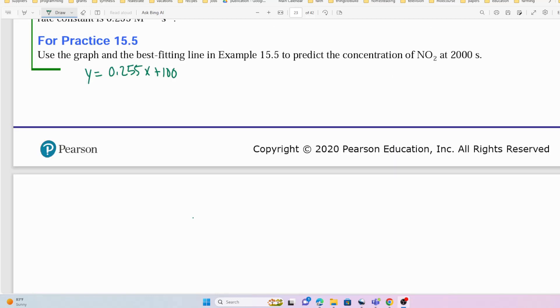Next, For Practice 15.5 asks us to use the graph and the best fitting line in Example 15.5 to predict the concentration of NO2 at 2000 seconds.